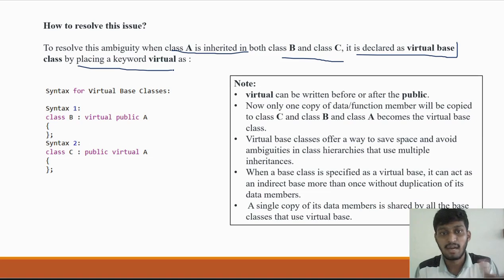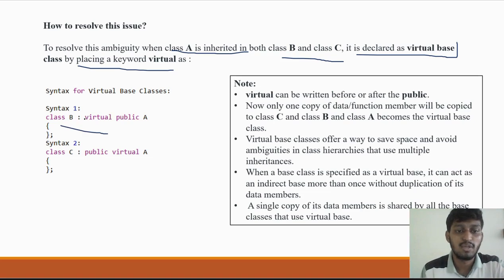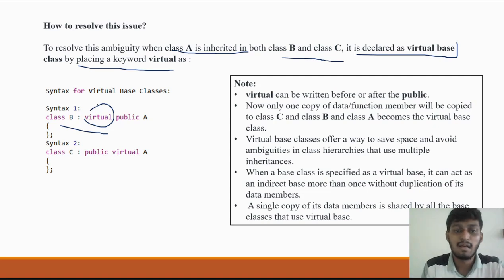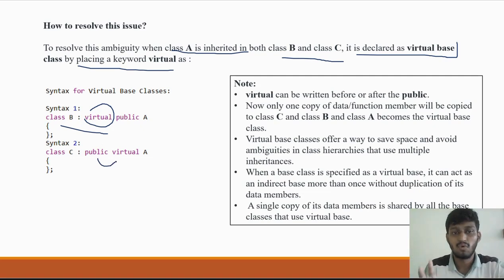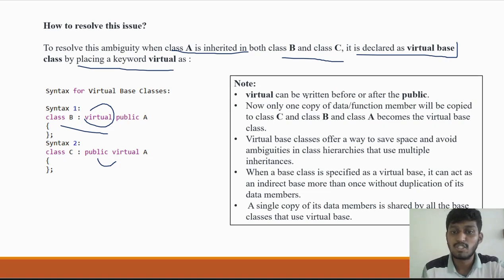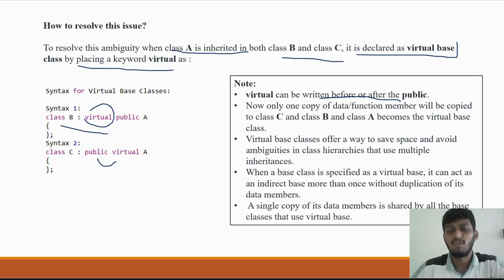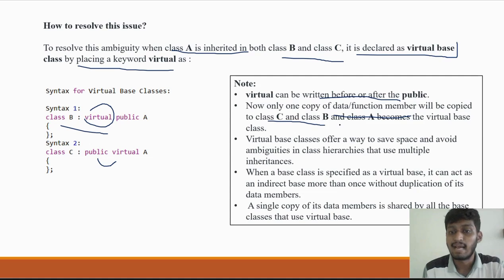To make a class a virtual base class, you write the keyword 'virtual' along with the access specifier — public, private, or protected — when inheriting. Only one copy of the data and member functions will be copied to class C and class B, and class A becomes the virtual base class.